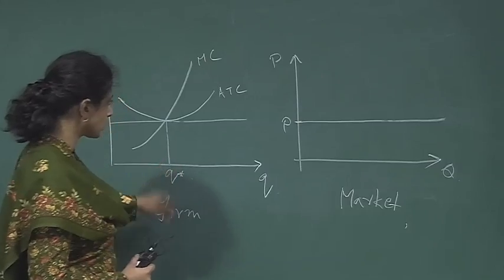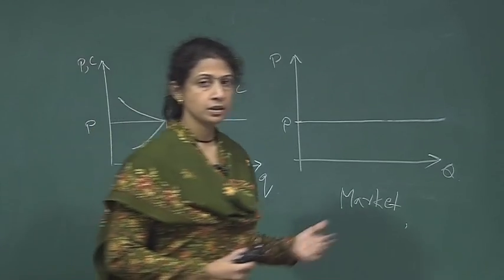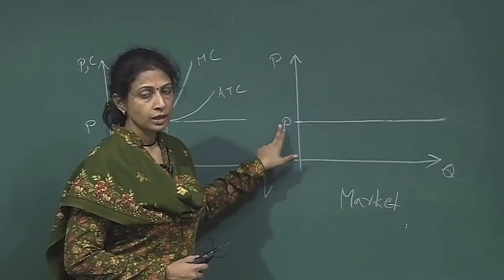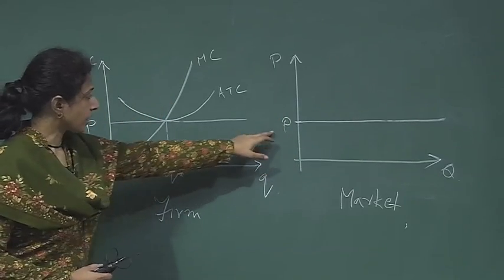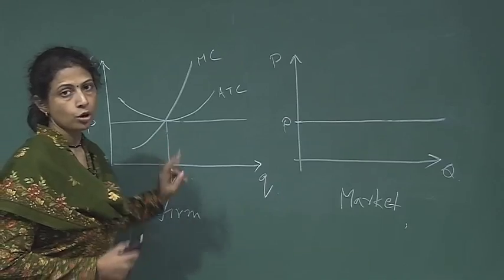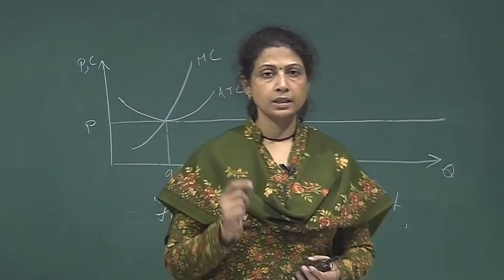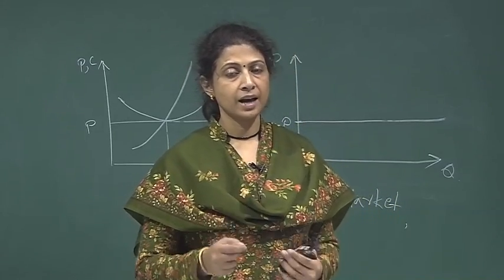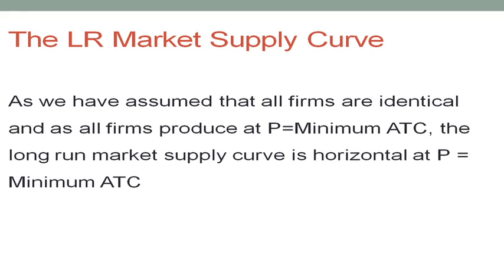Depending on how many firms are there in the market the market supply will be determined, but the price is not going to change. This price is the level at which average total cost of all the firms is minimum. The firms are operating at their minimum cost, that is the price they are charging in the market, and at that price unlimited supply is possible. So the long run market supply curve is horizontal.